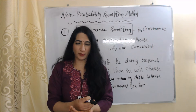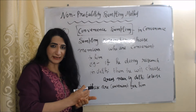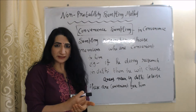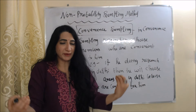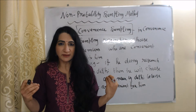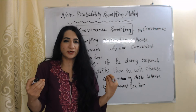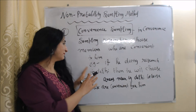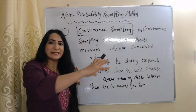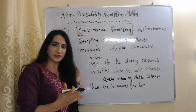Now we will talk about non-probability sampling. The first method is convenience sampling. In convenience sampling, the researcher chooses members who are most convenient to him. For example, if he is doing research in Delhi, he will choose areas nearby Delhi because those are more convenient to him.